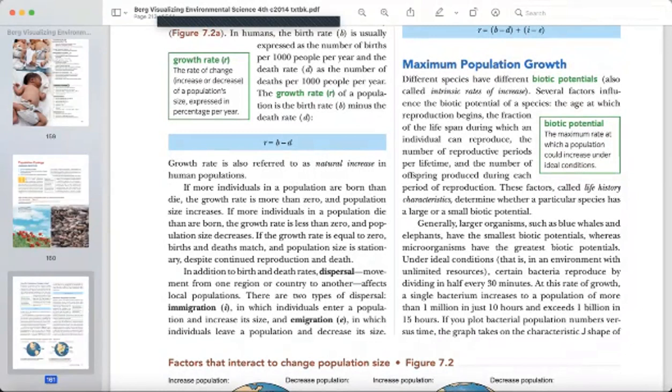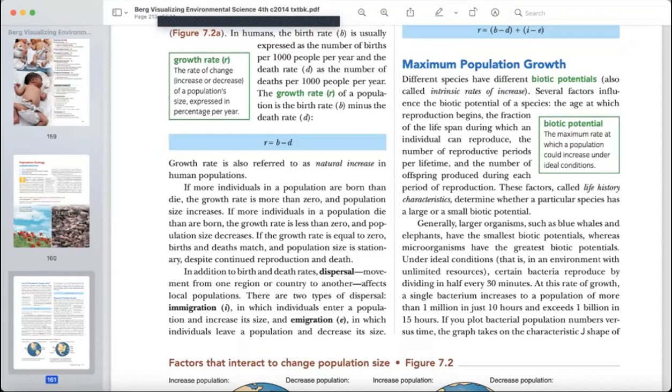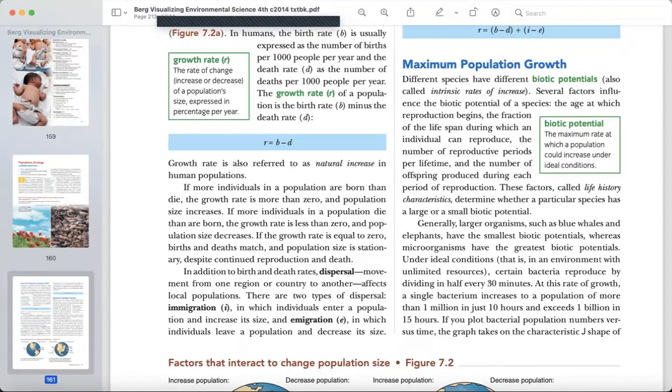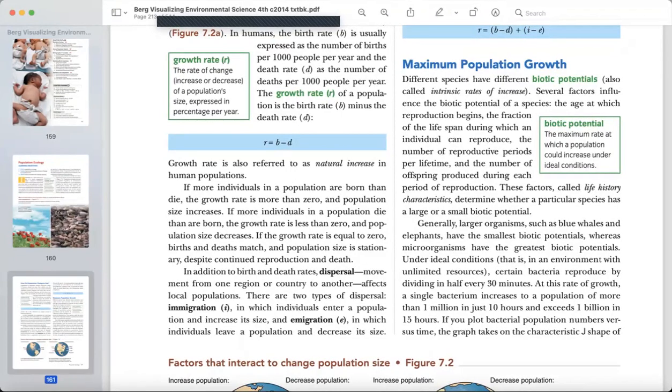For example, elephants have a very slow growth rate, biotic potential, because they have very large time periods for a child. And they just only have one offspring, one child, one little elephant. Whereas maybe cats or mice, they can have several children at one time, and they can have multiple because the period is short. So they can have multiple several children during that time period. That is why their population is much higher. Biotic potential is the maximum rate at which a population could increase under ideal conditions.